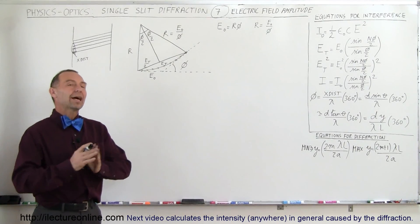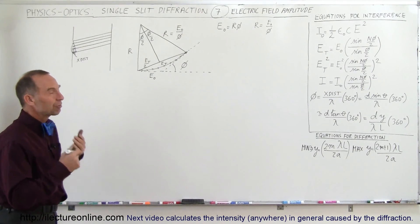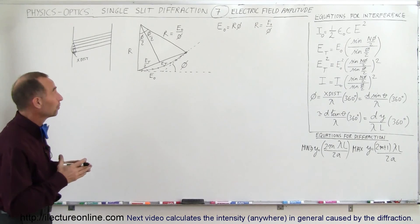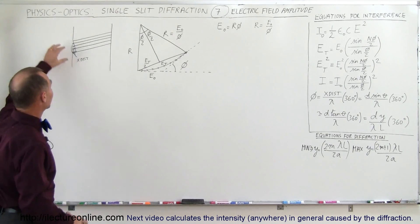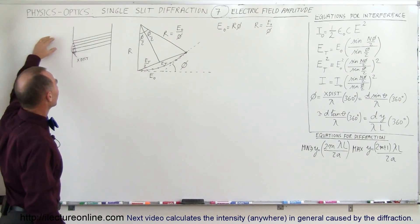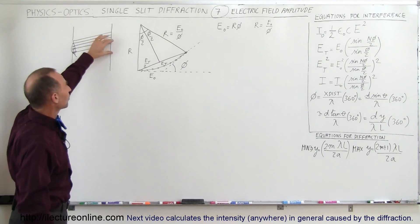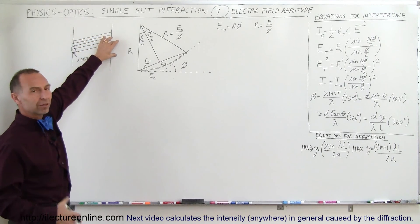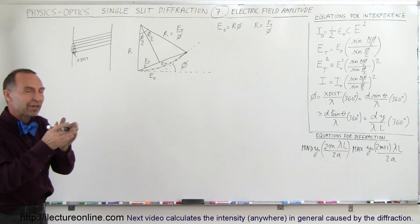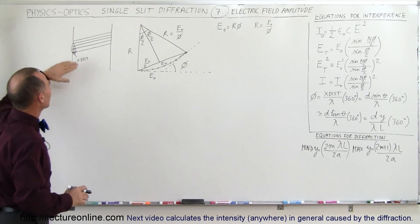Welcome to ElectronLine. We're going to take a closer look at the electric field amplitude caused by diffraction. We have a single slit with a beam of light coming through it. If you look directly across the slit, we have a maximum called the central maximum, because all portions of the beam are in phase — there's no phase distortion of any sort.